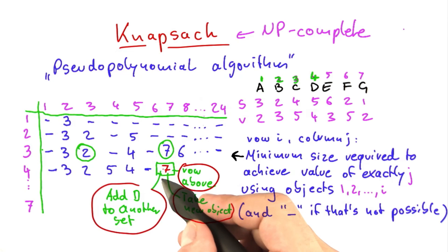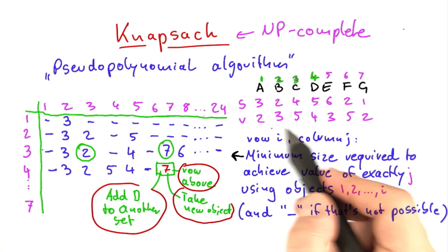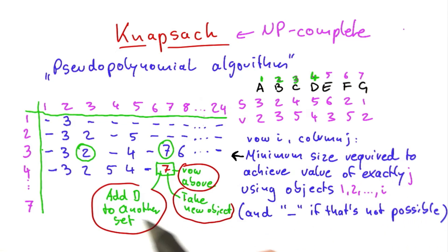The interesting part is this. In order to fill this cell here, we do not need to go through all possible combinations of the objects that we have. We just need to consider 3 cases, each of which can be calculated in constant time if we have the row previous to the row that we're trying to fill out.